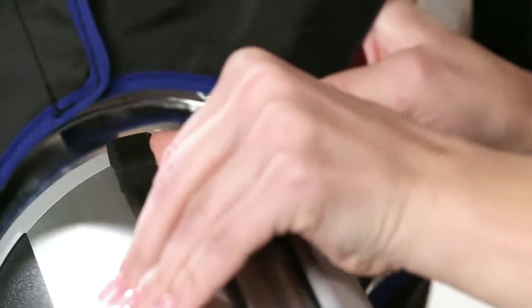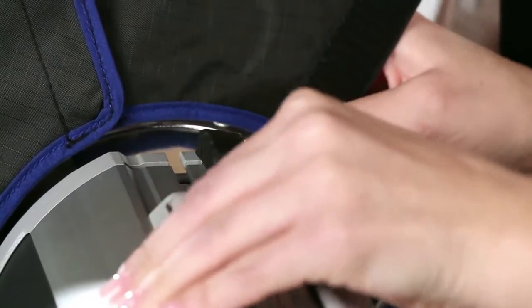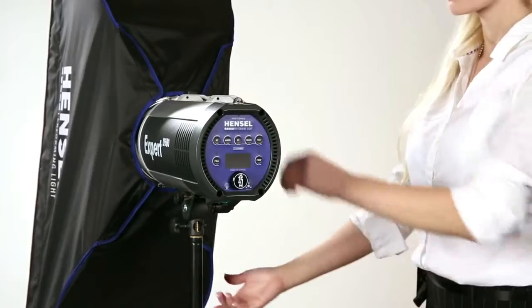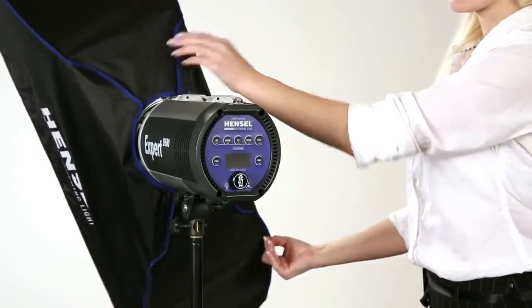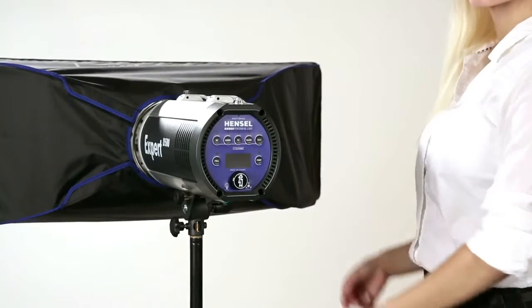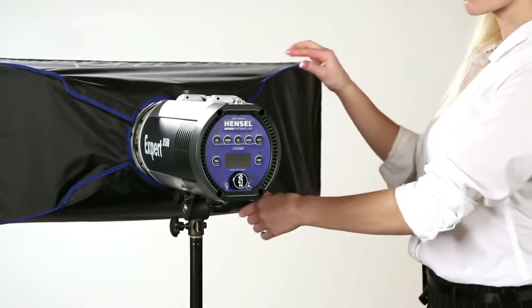Hensel offers a wide range of light formers. Select from a variety of reflectors, umbrellas and softboxes in all shapes and sizes. The softboxes can be rotated by 360 degrees, ensuring that you always have the perfect position.